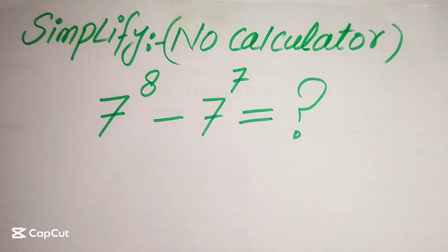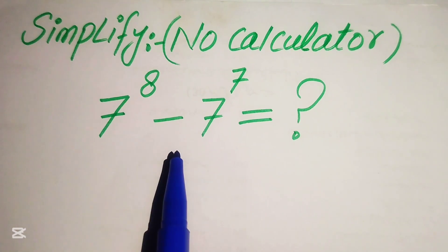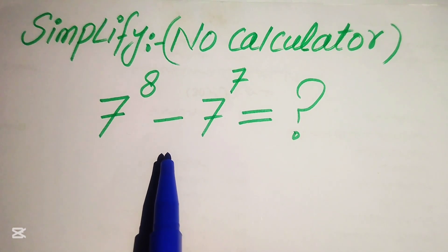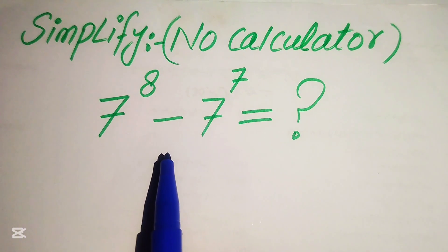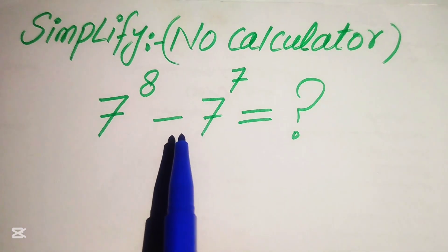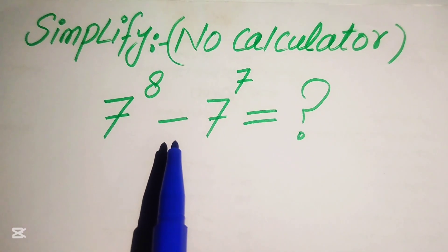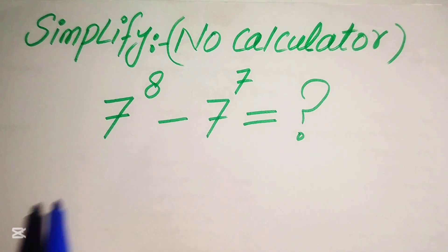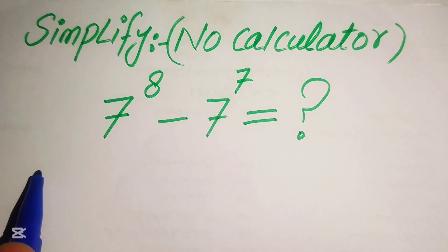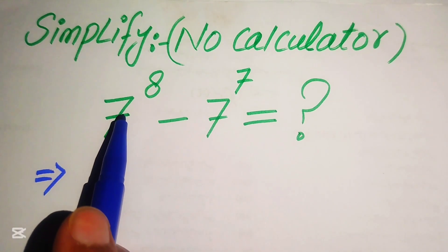Hello everyone. How to simplify this nice algebraic expression: 7 to the power of 8 minus 7 to the power of 7. We will simplify this algebraic expression without using the calculator — the calculator is not allowed in this problem. We will show all of the working on this paper. The very first step is to focus on the exponent of the first term.